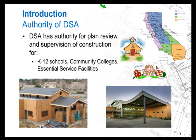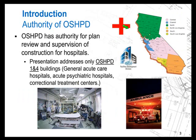We have four regional offices covered by each of the four colors you see on the map. And then OSHPD — they cover all the hospitals in the state of California. They're the Office of Statewide Health and Planning and Development. For the purpose of this presentation, we're going to focus on what's considered OSHPD 1 and 4 buildings.